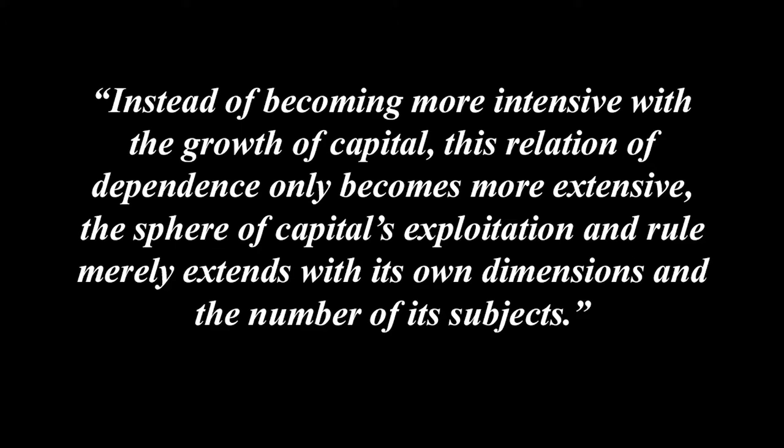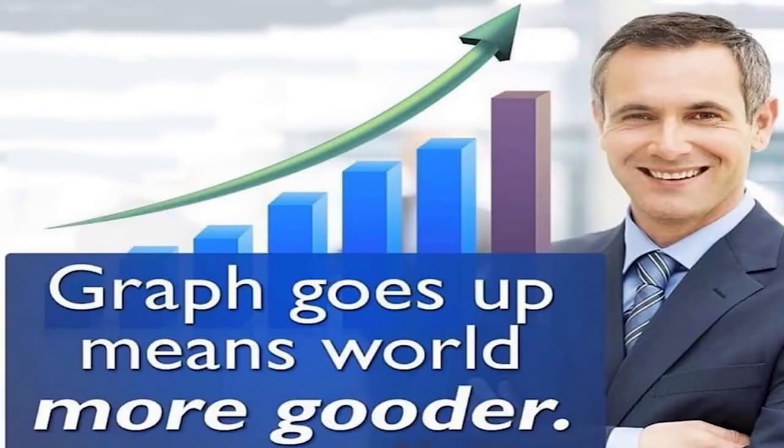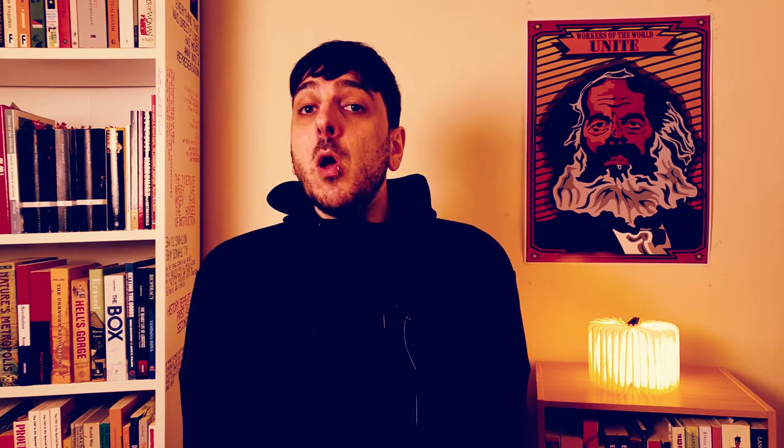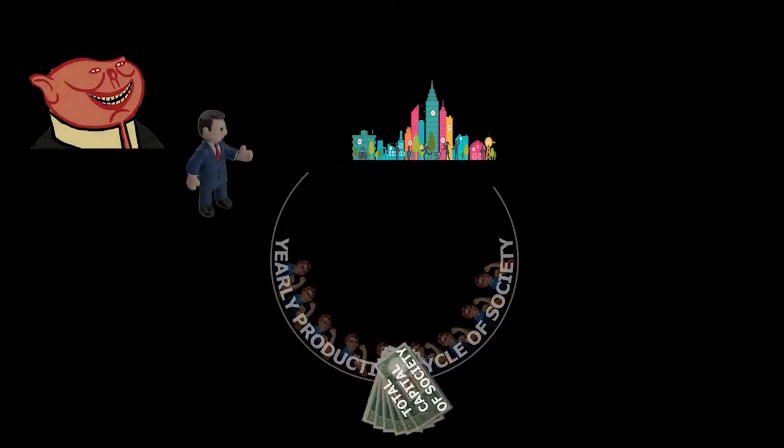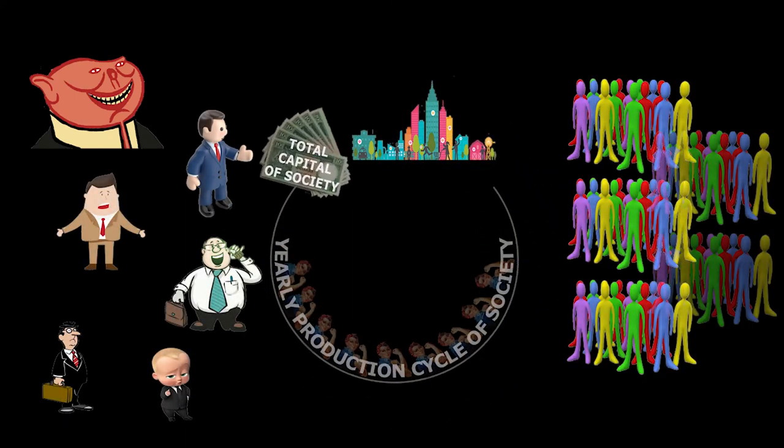The sphere of capital's exploitation and rule merely extends with its own dimensions and the number of its subjects. One other point we should also note here is that when Marx is talking about the accumulation of capital or growth, he's not meaning it in the purely economical development sense that economists usually speak of. He's actually discussing the accumulation of class relationships that these moments of growth produce. The expansion of capital then is the expansion of the social terms of reproduction and class divisions, that creates more or bigger capitalists on one side and more and more wage labourers on the other.